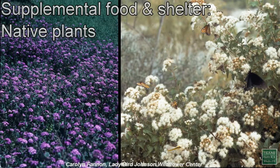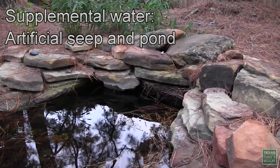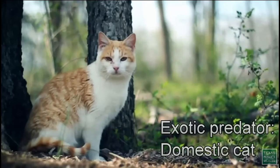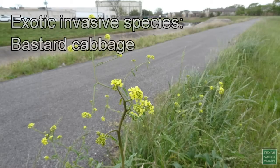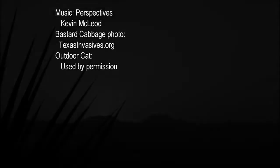We can all improve the edge habitat we already have by planting native species that native wildlife will recognize as food and shelter, by providing supplemental water, and by reducing the presence of exotic predators and other things that might make living on the edge more difficult. For more information on how to create good wildlife habitat in the edge, check out our book Texas Wildscapes. Visit us on the web and like us on Facebook.